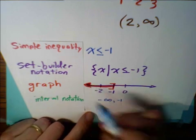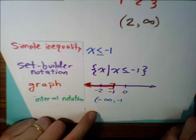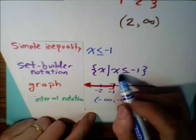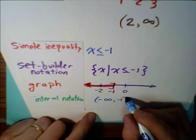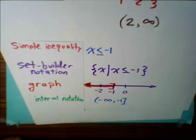Now ask yourself, are we including negative infinity? The number doesn't exist. So we're going to use a parentheses. Are we including the right-hand endpoint, negative 1? Yes. There is an equal sign. We are including it. So we use a square bracket. So here is our interval notation for the original problem.